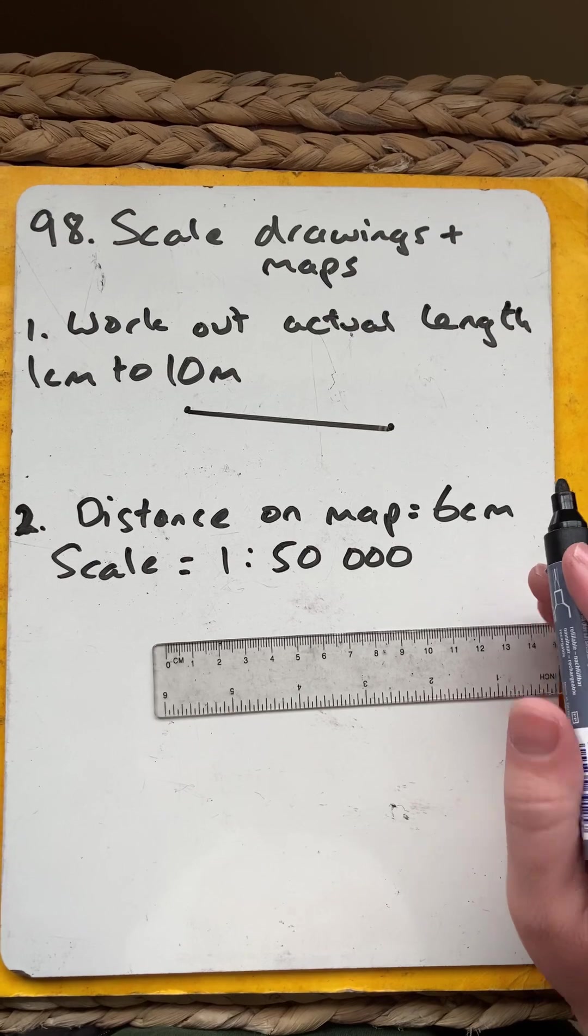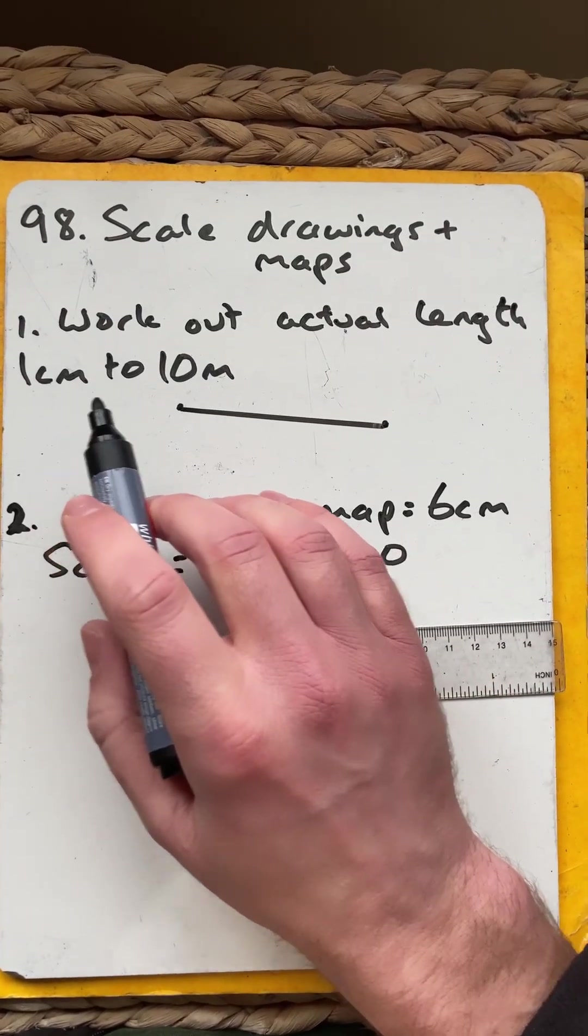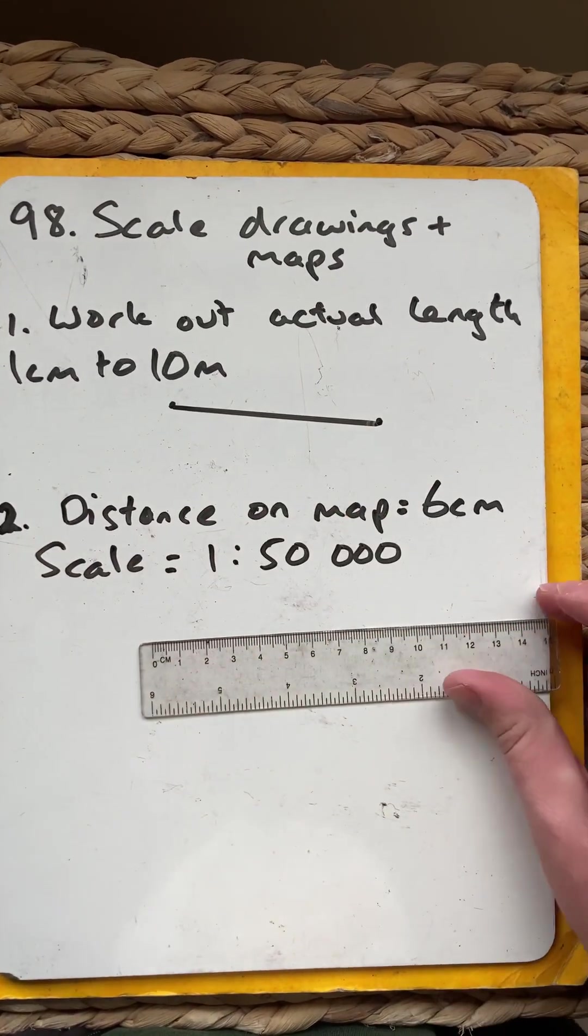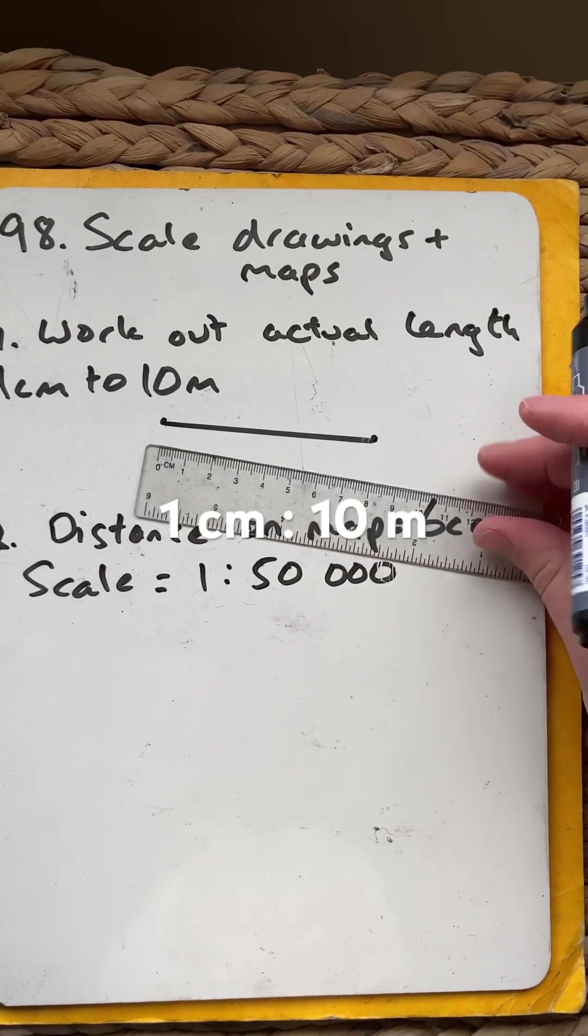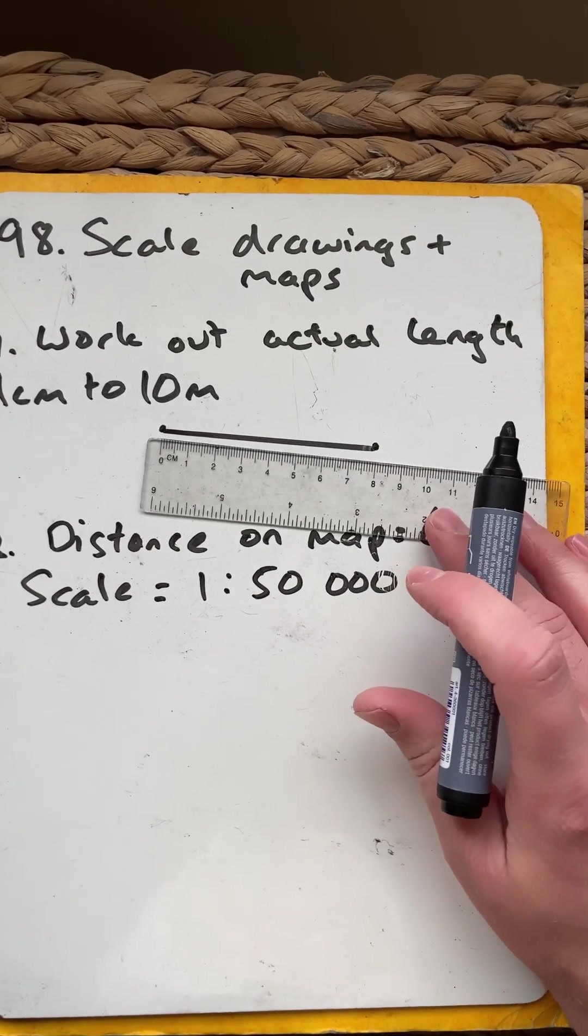So we need to work out the actual length if every centimetre represents 10 metres in real life. So if this is a map and we have this distance here, I'm going to measure it using a ruler.